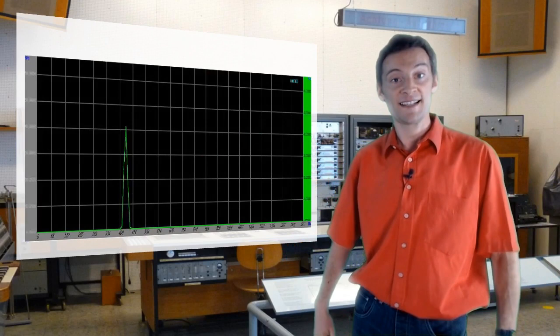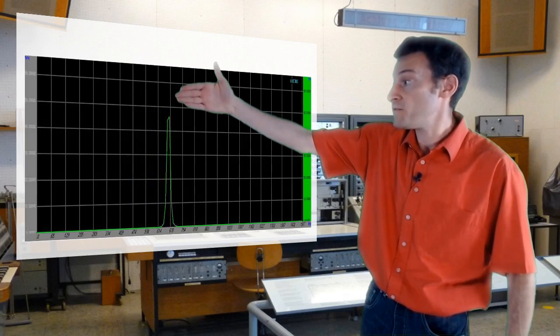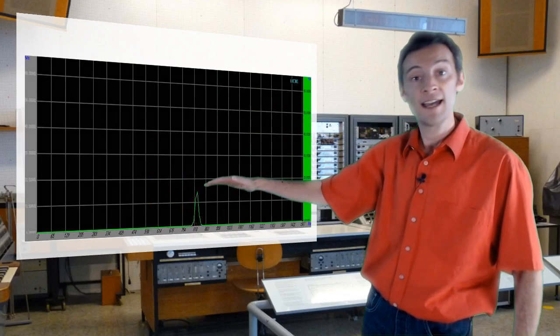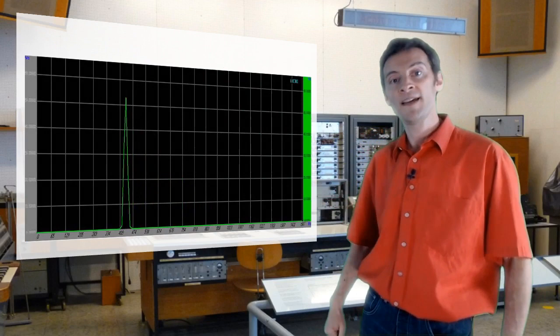We can now see our single sine wave represented as a peak. As the frequency increases, the peak moves to the right. And as the frequency decreases again, the peak moves back to the left. As the amplitude decreases, the peak gets smaller. And as the amplitude increases again, the peak gets larger.